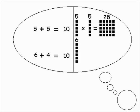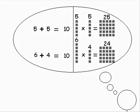But 5 times 5 is 25, while 6 times 4 is only 24. I wondered why there was a difference.